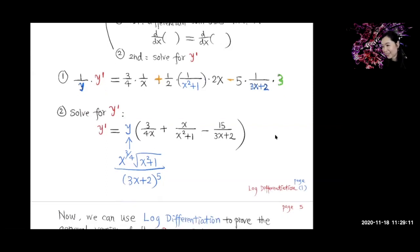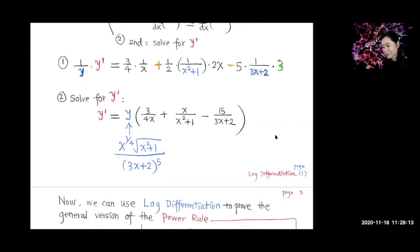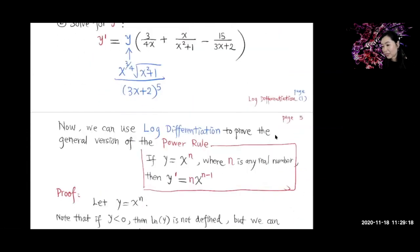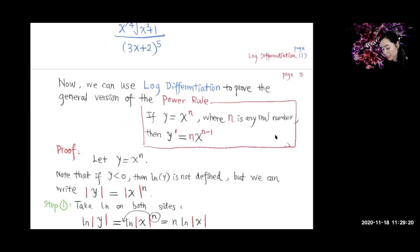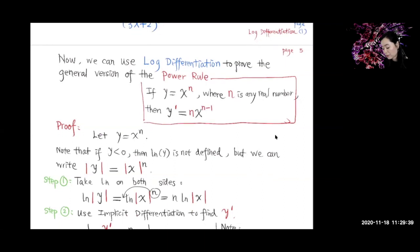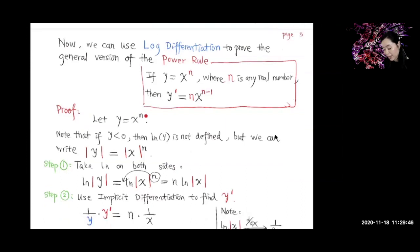We can use logarithmic differentiation to prove the general power rule. If y = x^n where n is any real number, then y prime = n·x^(n−1). Previously we only proved this for integer n or positive integer n. Now we can actually prove it for n being any real number. We have the function y = x^n. Note that if y is less than 0, then ln(y) is not defined — for ln(y) to be defined, y must be positive.